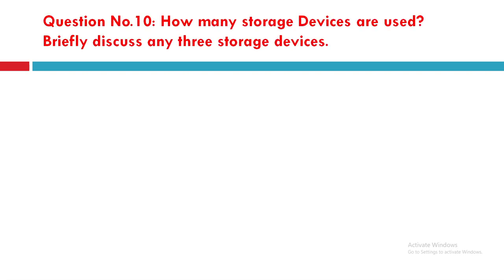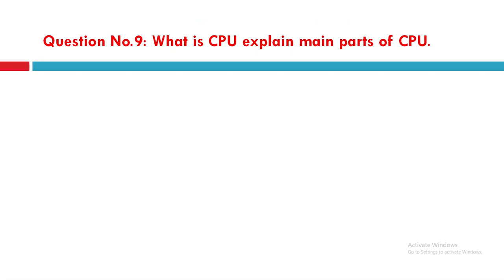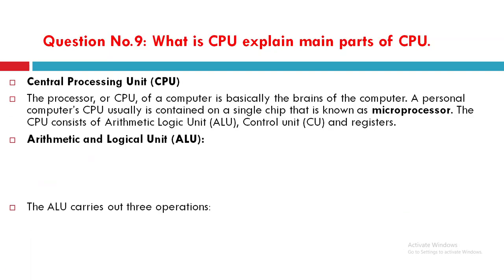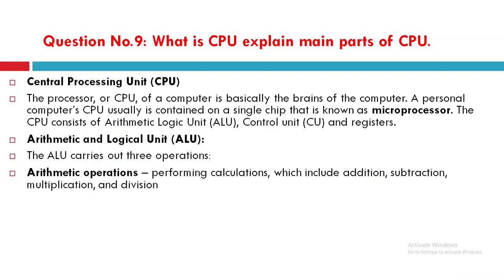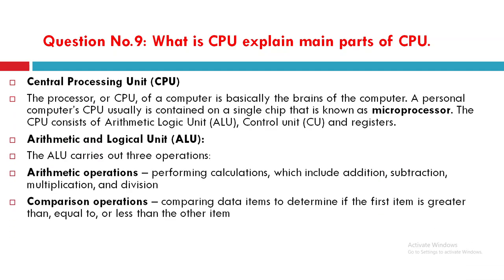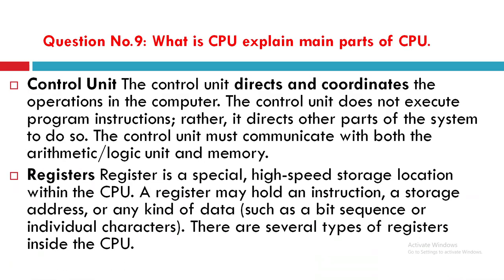There are several types of registers inside the CPU, such as MBR and others. That covers Question number 9 in detail — the central processing unit, arithmetic logic unit, arithmetic operations, comparison operations, and logical operations. This answer should be sufficient for your exam.